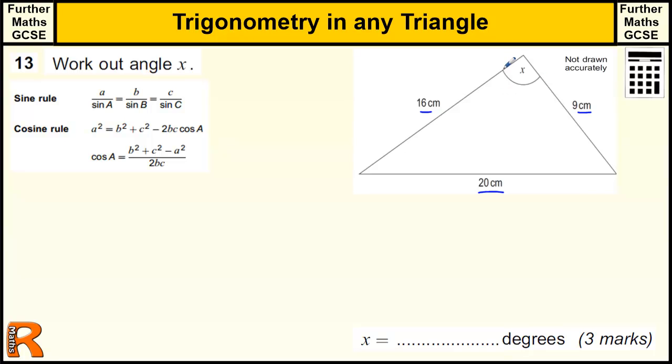Therefore we can find the angle using this version of the formula here, which is quite nicely given to you. If you don't get given that formula, which you do for this exam, but I know on GCSE higher exams you're not given that version of the formula, then you can just put the values into the equation and then rearrange it to get what cos A equals by taking away the b squared and the c squared, and then dividing by minus 2bc.